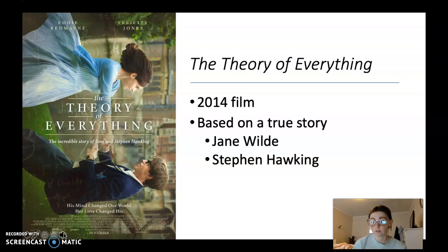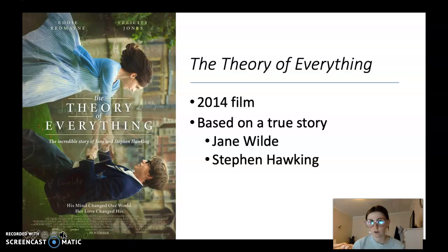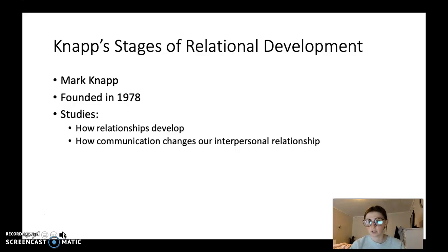Stephen Hawking is literally a genius and was going to school at Cambridge University. He ended up getting Lou Gehrig's disease, also known as ALS, which is where you lose all control in your body, but he's still able to think by the end of the movie. At the beginning, he meets a girl at a party at their school called Jane Wilde. For the rest of this presentation, we're going to be looking at the relationship that Jane and Stephen have with each other, basing it off the concepts from Knapp's Stages of Relational Development.